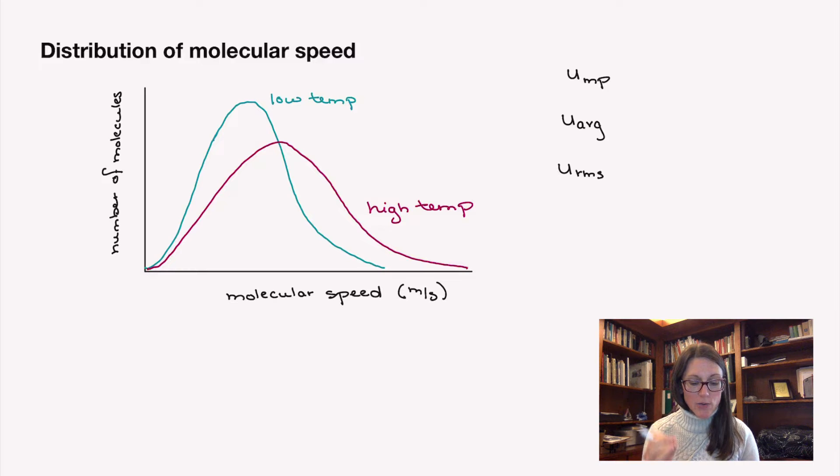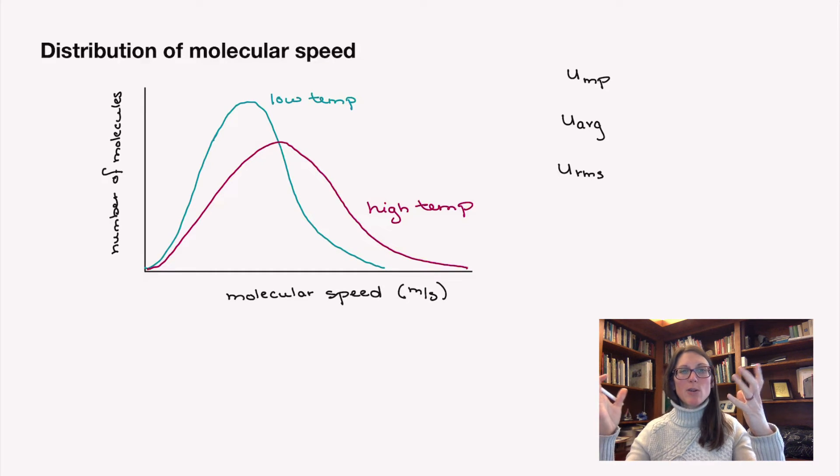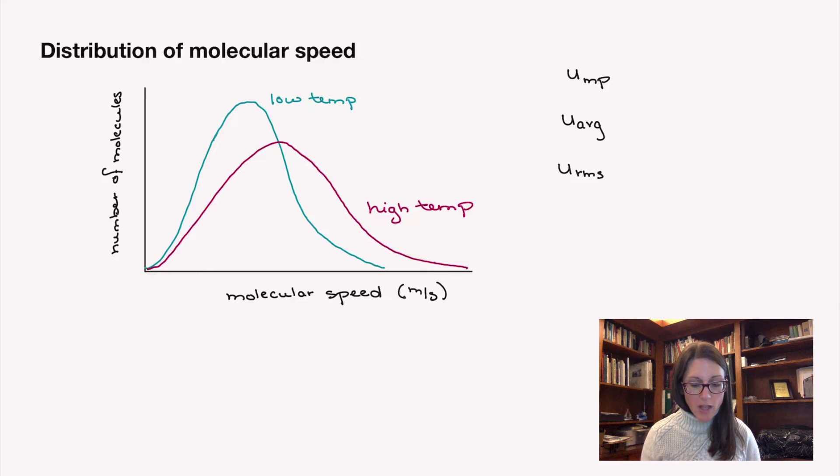If you increase the temperature, you will see the whole peak shift and broaden. This is your Boltzmann distribution. We've seen it at least three times already this year. But we do see that broadening because, since we have more available molecular speeds, you have fewer particles at any individual speed.